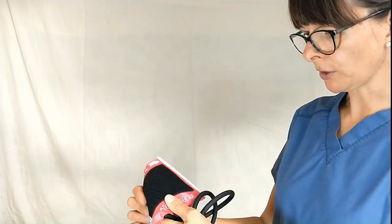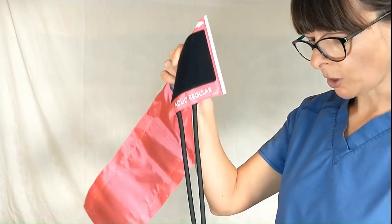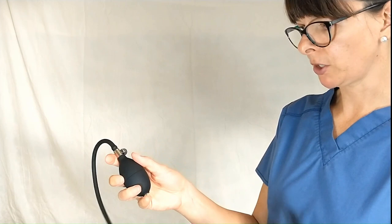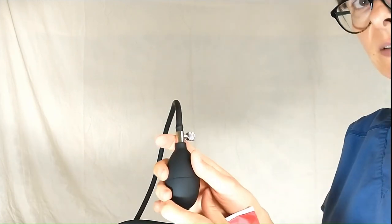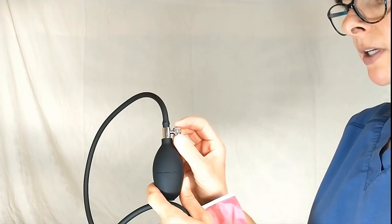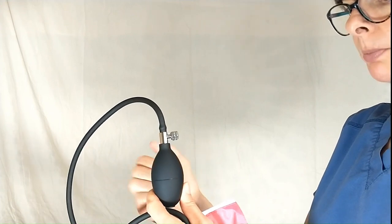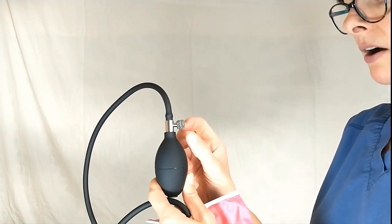Now looking at the two other compartments or parts, we have our bulb here, the one that actually inflates the blood pressure cuff. So there is the dial and then here's the bulb that we will actually squeeze to inflate the cuff.